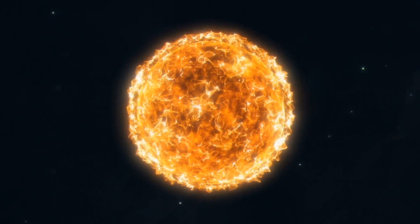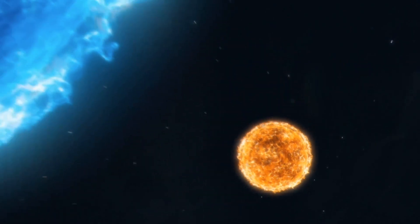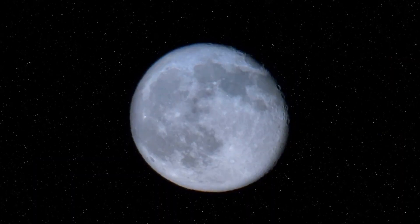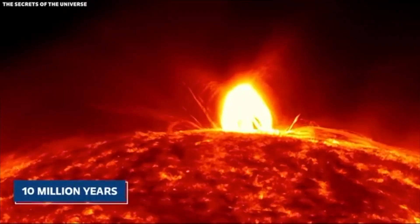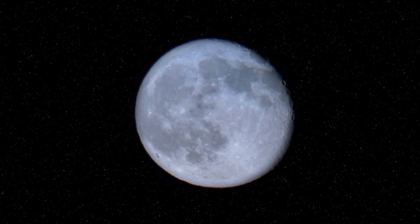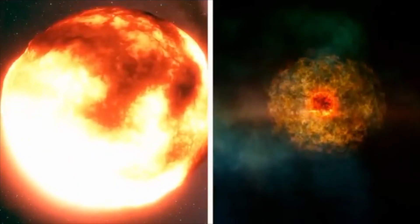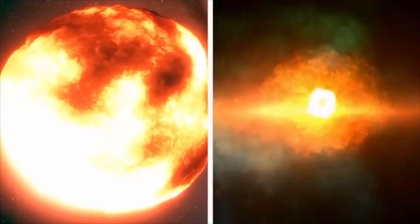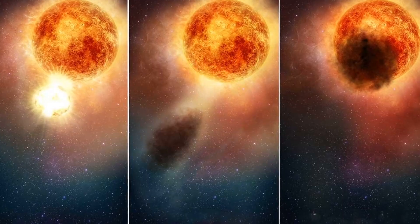In the vast expanse of the cosmos, the tale of Betelgeuse beckons. Located a staggering 650 light-years away in the heart of the Orion constellation, this isn't just any celestial body. It's a red supergiant, radiating with a brilliance over 100,000 times our own sun.